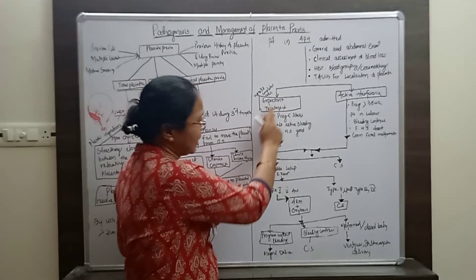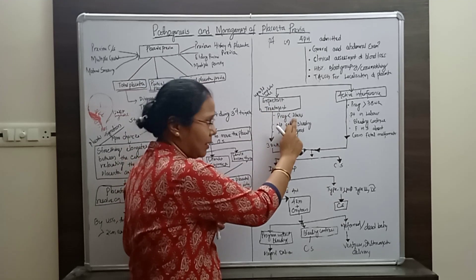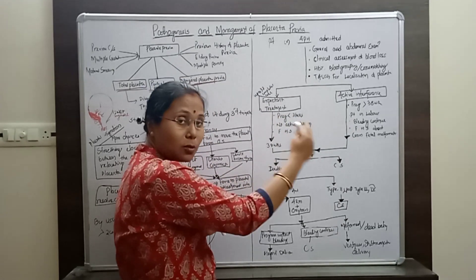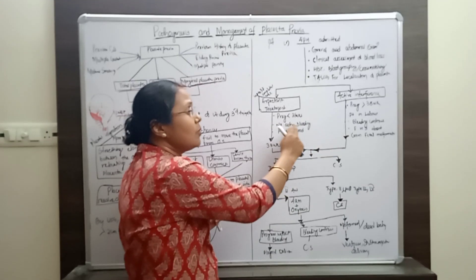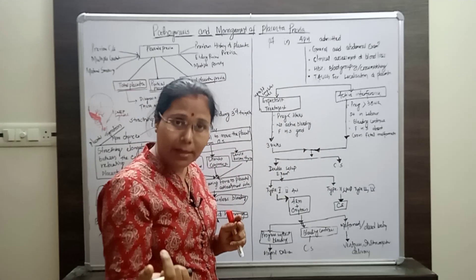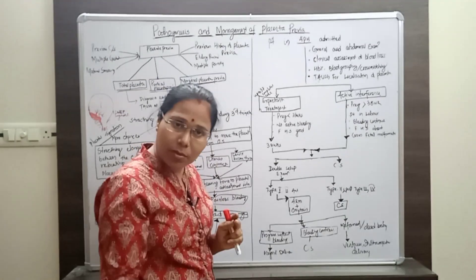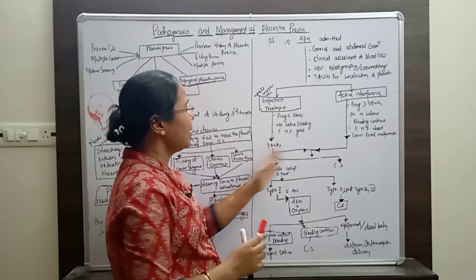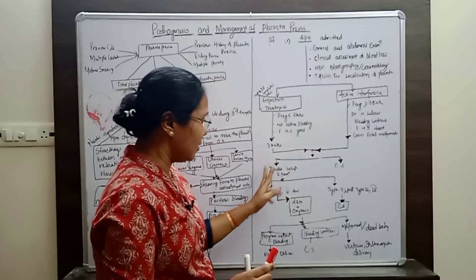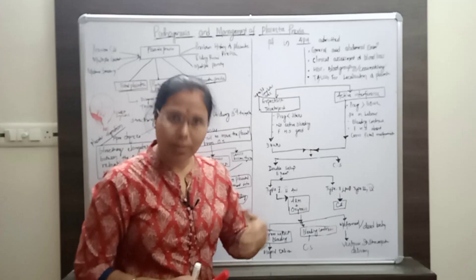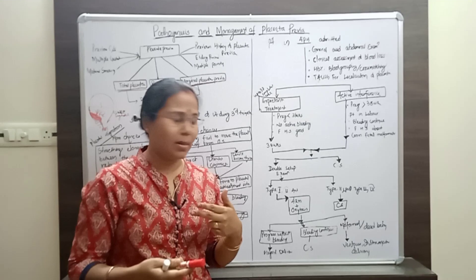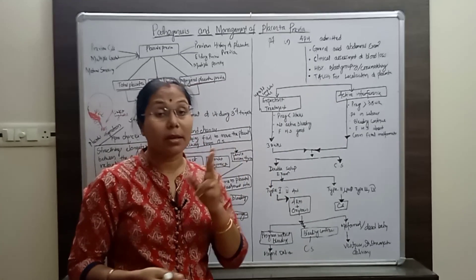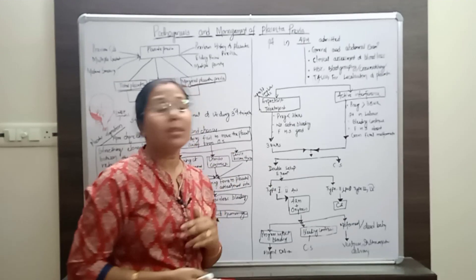In expectant treatment, if the pregnancy is less than 36 weeks, we allow it to continue up to 38 weeks. This is done when there is no active bleeding and the fetal heart sound is good. We allow the pregnancy up to 38 weeks, after which we proceed with induction of labor. This induction is done by a double set of examinations.